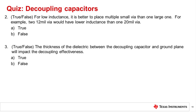Question 2. True or False? For low inductance, it is better to place multiple small vias than one large one — for example, two 12 mil vias would have a lower inductance than one 20 mil via. The correct answer is True. For a 62 mil board thickness, the inductance of a 12 mil via is 1.27 nH and the inductance of a 20 mil via is 1.11 nH. Placing two 12 mil vias in parallel cuts the inductance in half from 1.27 nH to 0.64 nH.